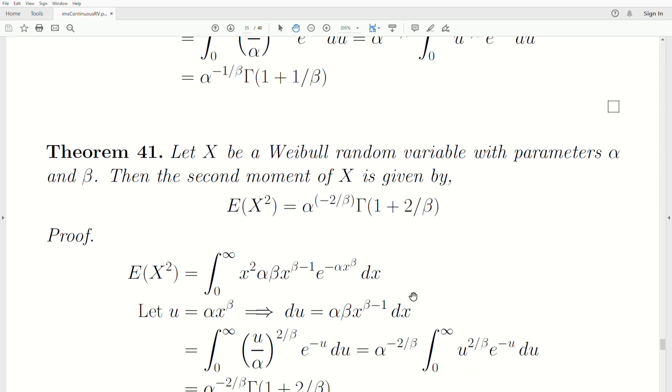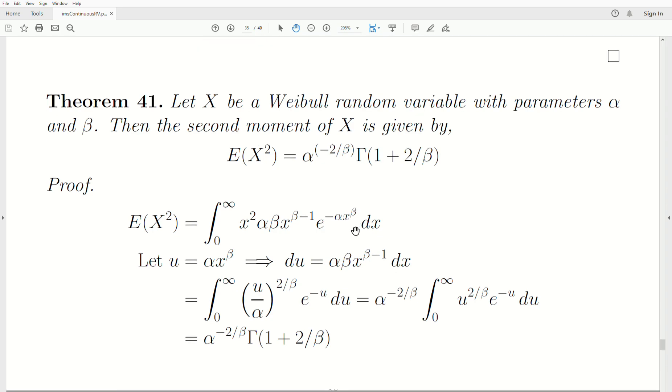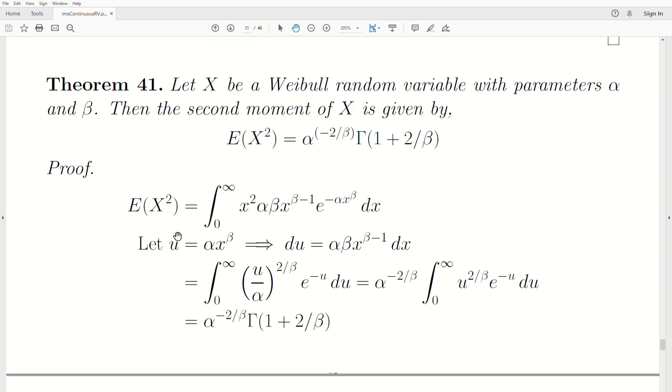To calculate the variance of X, it's easier to calculate the second moment of X. Theorem 41: Let X be a Weibull random variable with parameters alpha and beta, then the second moment of X is given by this expression. We're going to do something very similar we did with the mean. The expected value of X squared is you take X squared times its density, integrate it over all possible values.